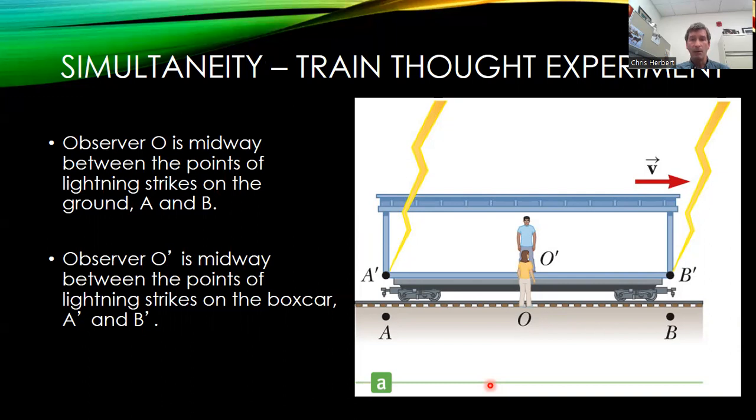Observer O prime however, he's inside the train. So he's moving at some velocity V with respect to O's observation. Essentially, the two frames of reference are inertial.